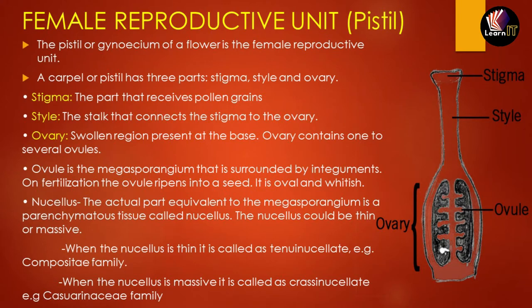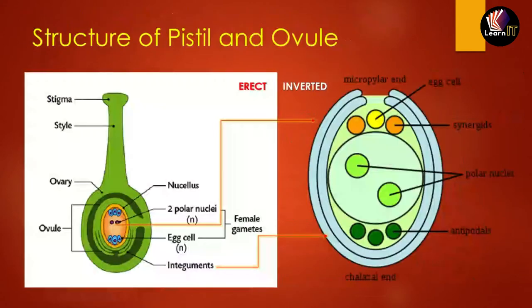The nucellus is parenchymatous. When the nucellus is thin, it is called tenuinucleate — example: the Compositae family. When the nucellus is massive, it is called crassinucleate — example: the crassinucleate family.